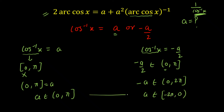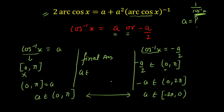Combining both solutions using the union (OR condition), our final answer is: A ∈ (−2π, 0) ∪ (0, π].